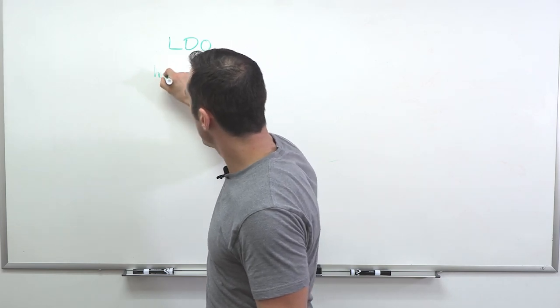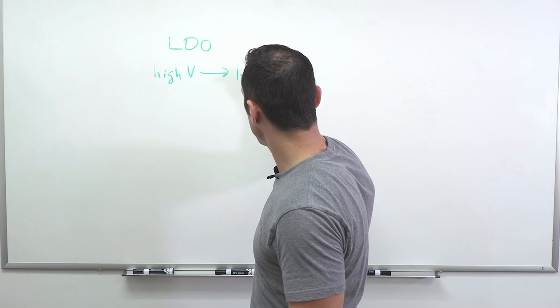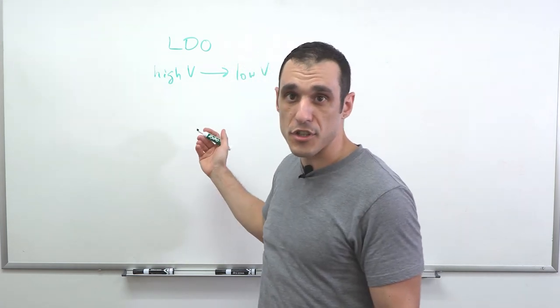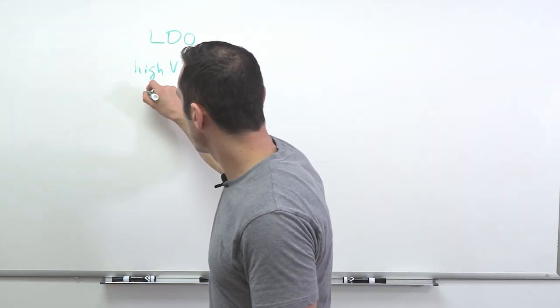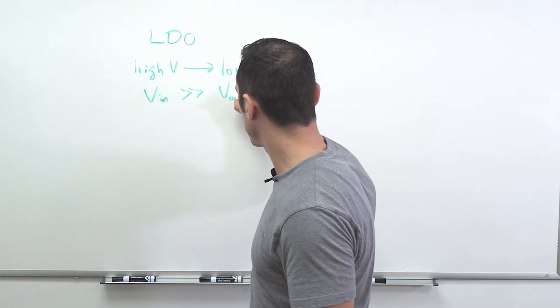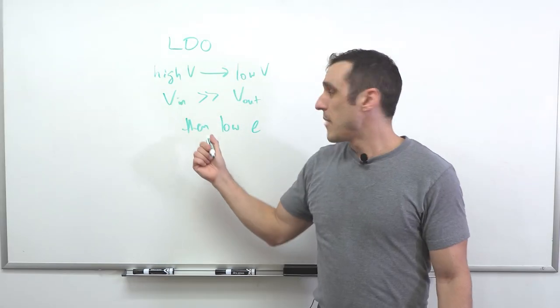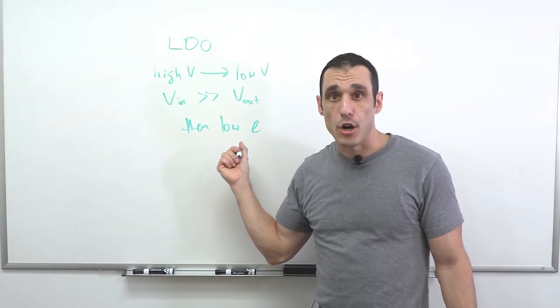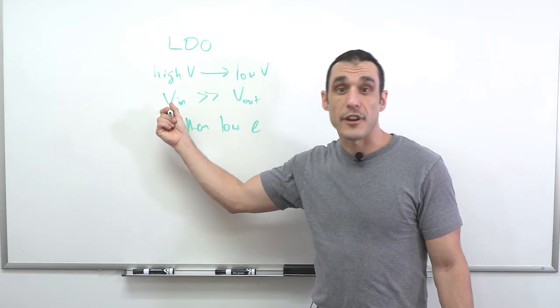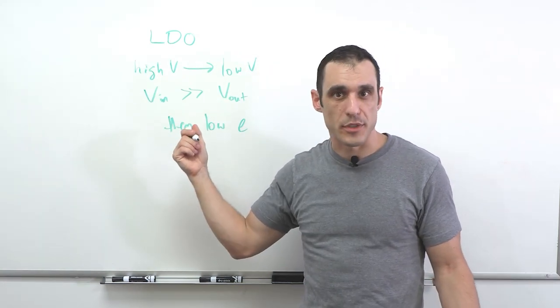and I go down to a low output, I can be very inefficient. So if my voltage in is much, much greater than my voltage out, then I get very low efficiency. So my efficiency can be very low with an LDO if I need to step down from a very high input voltage to a very low output voltage. Switching regulators don't really have this problem. A switching regulator can very easily step down from a high input voltage to a low output voltage without having a very low efficiency.